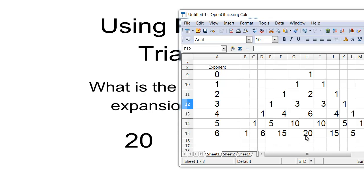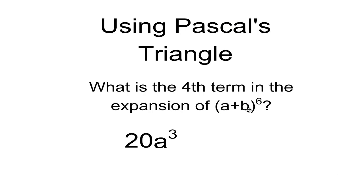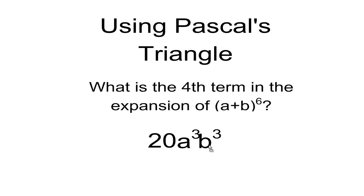Now, to find the exponents, I know that a is going to start out with exponent 6, then 5, 4, 3. The second term in my binomial is b, and I know the exponents always add to 6, so the b term is going to be b to the exponent 3. That's the fourth term in this simple expansion: 20a³b³.